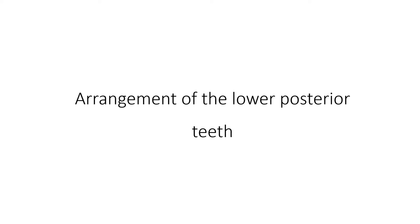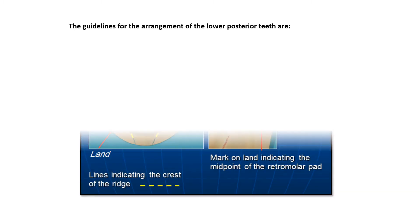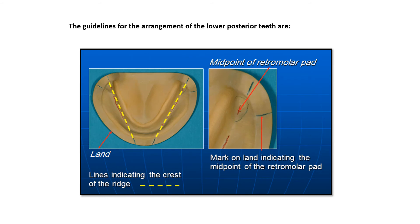We now move to the arrangement of the lower posterior teeth. The guidelines for the arrangement of the anterior teeth applied to the arch as a whole; we will now focus on the guidelines for the arrangement of the lower posterior teeth, indicating the crest of the ridge.